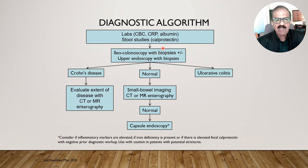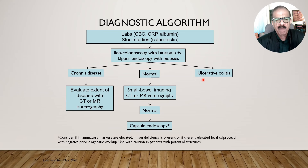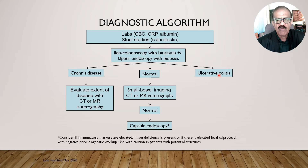If calprotectin is elevated, these patients should undergo colonoscopy with biopsy. After endoscopic examination, we are usually sure if this is ulcerative colitis because it shows typical continuous inflammation starting from the rectum and ascending upward. If that is the case, the diagnosis of ulcerative colitis is made and confirmed by biopsy. If it does not turn out to be UC, other conditions should be considered.